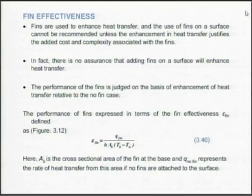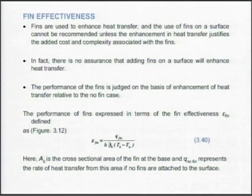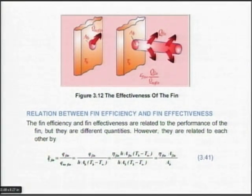What effectiveness value is best? The effectiveness definition is Q_fin upon h·A_b·(T_b − T_∞), where the denominator represents the no-fin case. You want this effectiveness of the fin to be greater than 1. If it is equal to 1, there is no use of putting a fin. If it is less than 1, the fin acts exactly as an insulator, which is not intended. We want the heat transfer rates high.